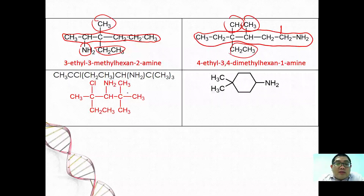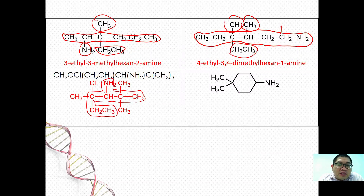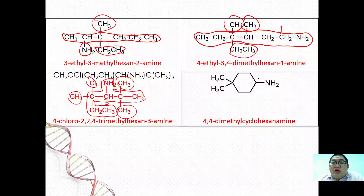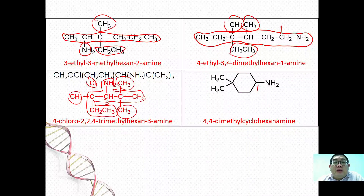For another primary amine example with 6 carbons and NH₂ on the third carbon, with a methyl and a chloro substituent, the full name is 4-chloro-2,2,4-trimethylhexan-3-amine. If you have a cyclohexane ring with NH₂, it automatically becomes carbon number one — cyclohexanamine — and with two CH₃ groups on C4, it is 4,4-dimethylcyclohexanamine. These are all examples of primary amines.